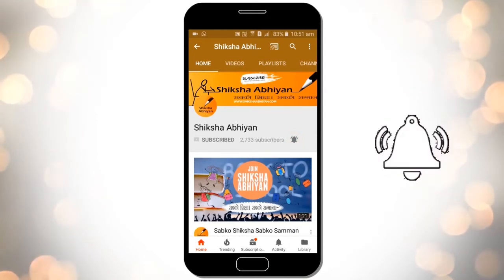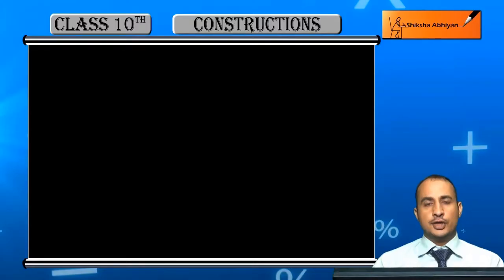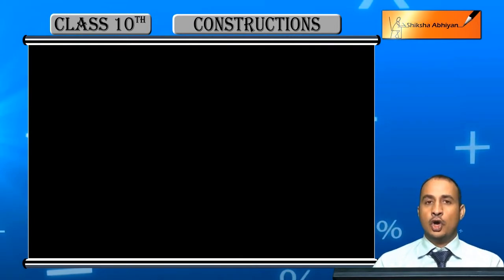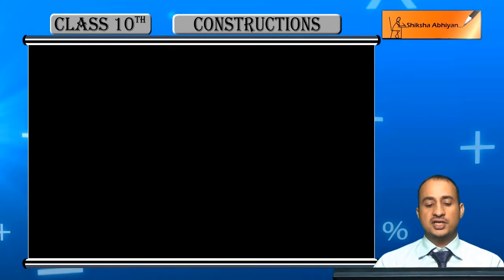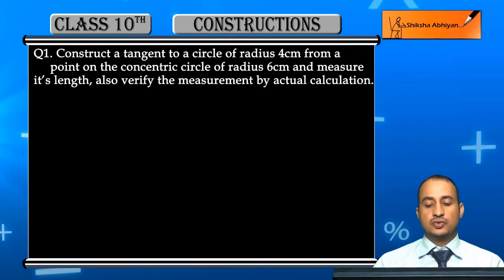Now student, we will start the second exercise of the chapter constructions. Exercise mein hum circle per tangent se related questions karenge. First question is: construct a tangent to a circle of radius 4 cm from a point on a concentric circle of radius 6 cm.